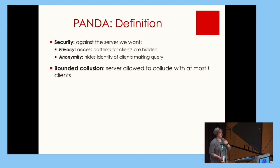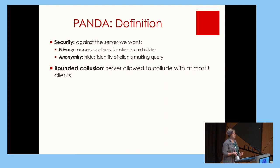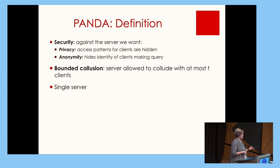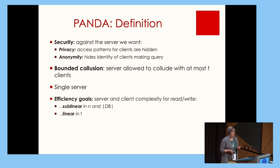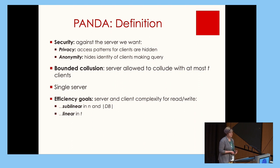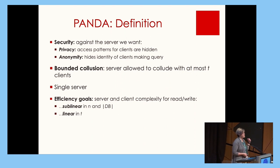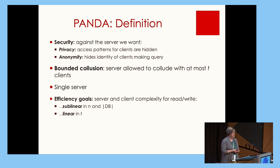The server may collude with clients, gaining access to both their actions and their secret keys set at setup time. We set a bound on the number of clients the server may collude with, and we call this number t, our collusion bound. We also want a single server scheme — not one that relies on multiple non-colluding servers. Finally, we want efficiency: client and server read complexity should be sub-linear in the number of clients n and the database size, and linear in the collusion threshold t. This combination is what we call the PANDA setting.